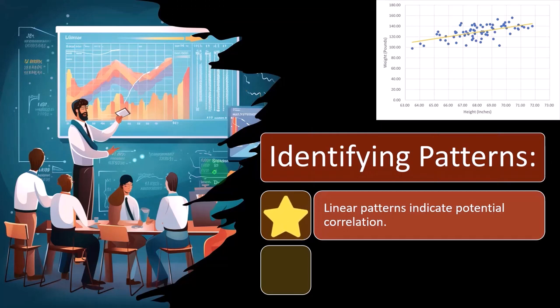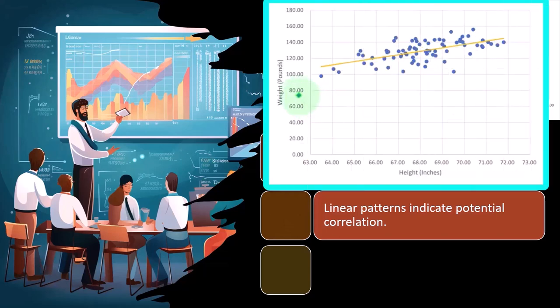So identifying patterns. Linear patterns indicate potential correlation. So this one's the height and weight again. Now, with height and weight, you would think pretty confident that you make a hypothesis that there is going to be a cause and effect relationship. If someone is taller, they're going to have more mass, they're going to weigh more typically everything else equal. So if I plot that, you could see that pattern.